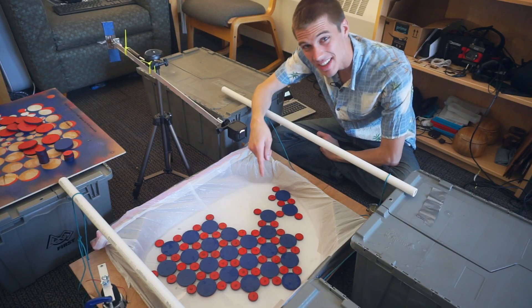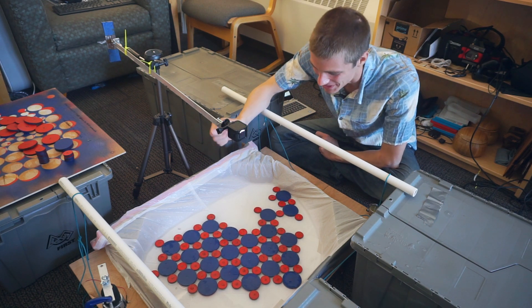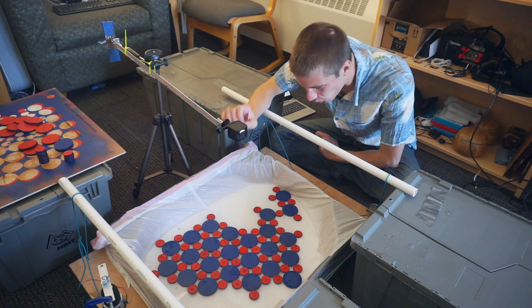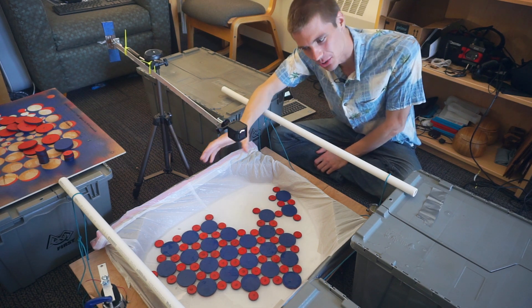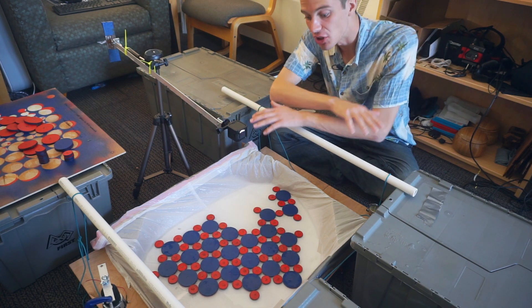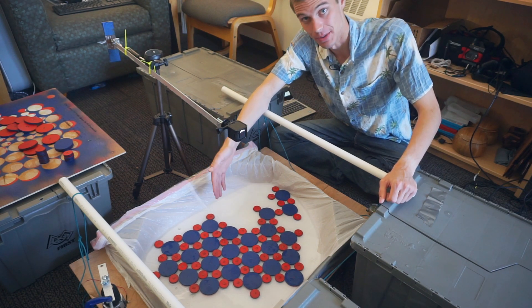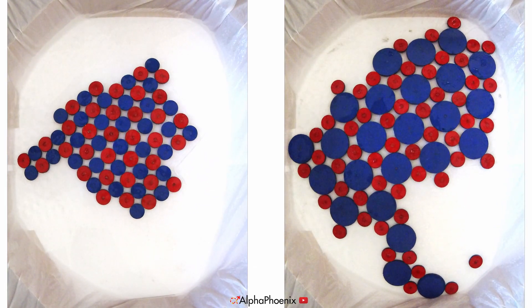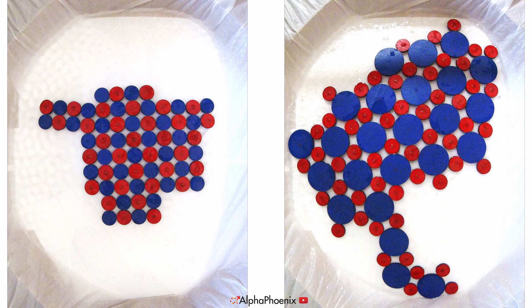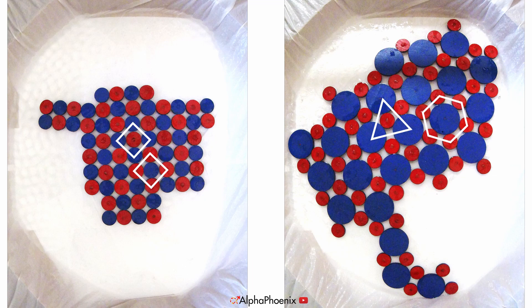So that doesn't exactly look like a checkerboard pattern anymore, does it? By making one tiny change to the initial rules of the system, we've completely upheaved the crystal structure formed by that system. Instead of the checkerboard square pattern of red and blue discs, we get hexagons and triangles made of red and blue discs. A completely new pattern that repeats through the entire structure.